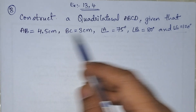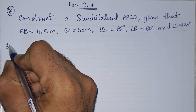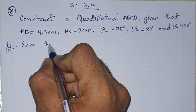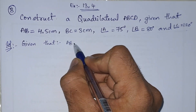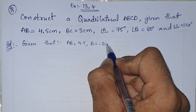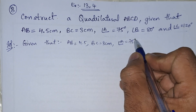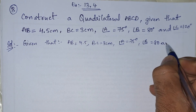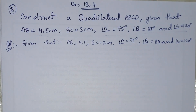They have given three angles and two sides. In the solution, first we write what is given: line segment AB equals 4.5 centimeters, BC equals 3 centimeters, angle A equals 75 degrees, angle B equals 80 degrees, and angle C equals 120 degrees.